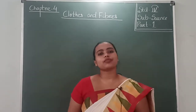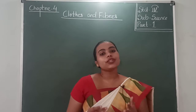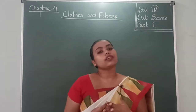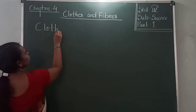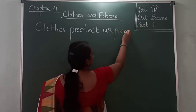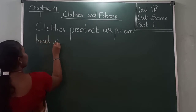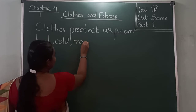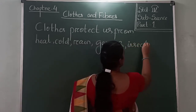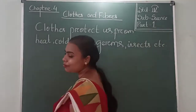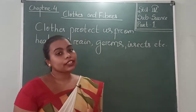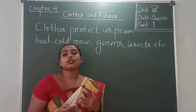Hello kids, welcome to this part of the video. In this part we are going to learn a new chapter — clothes and fibers. We all have three basic needs: food, clothes, and shelter. Clothes protect us from heat, cold, rain, insects, and so on. This is the function of clothes — it protects us. But clothes don't just do this; they also make us look smart.